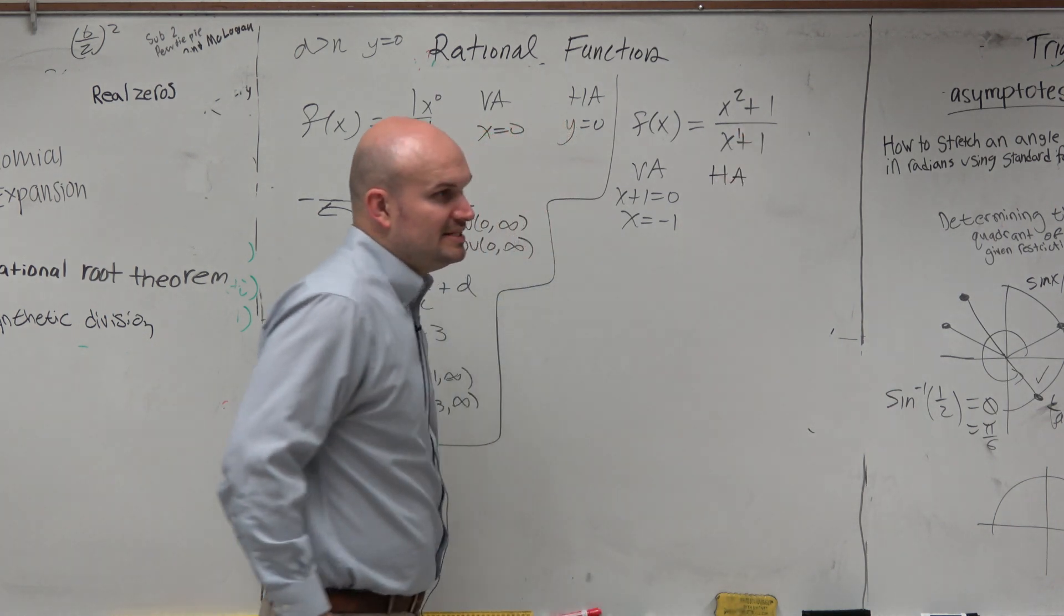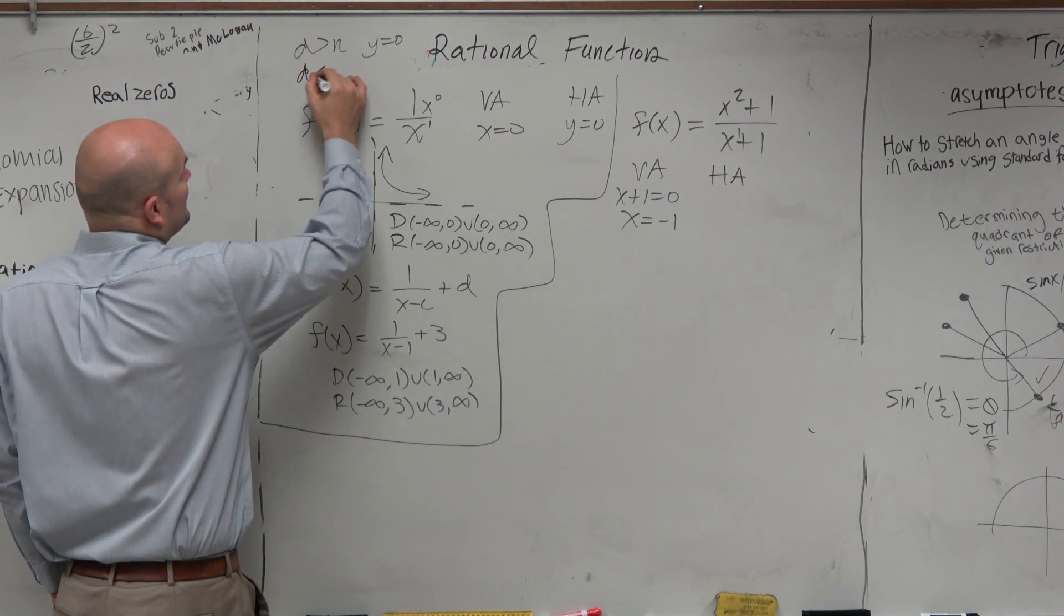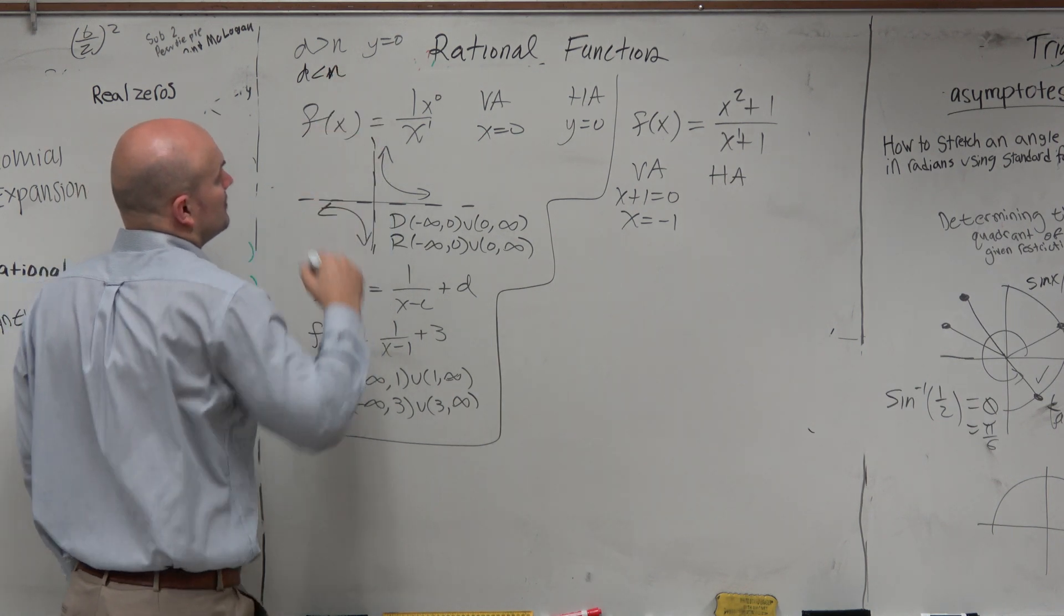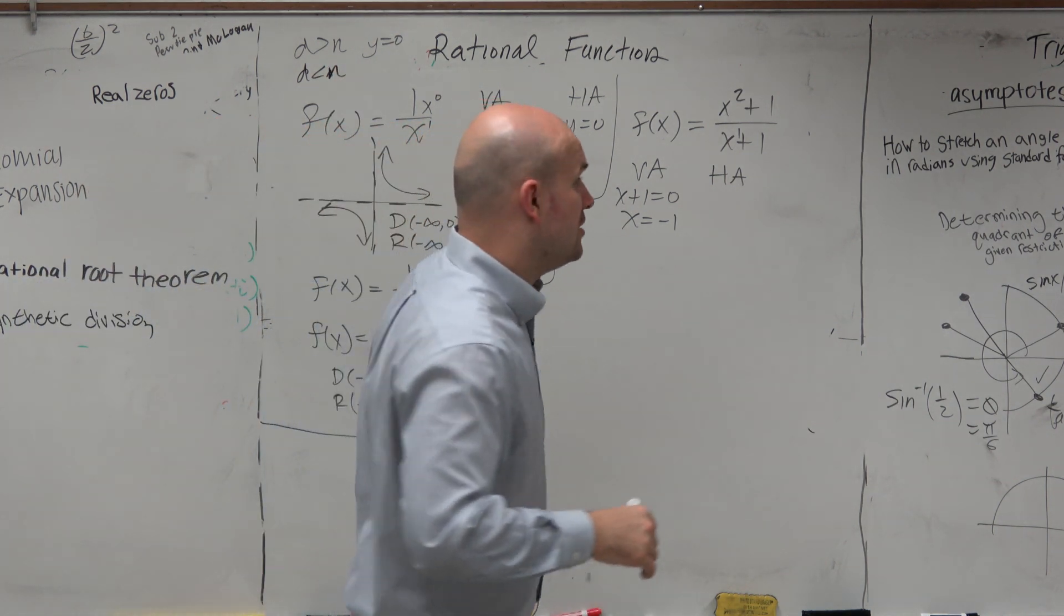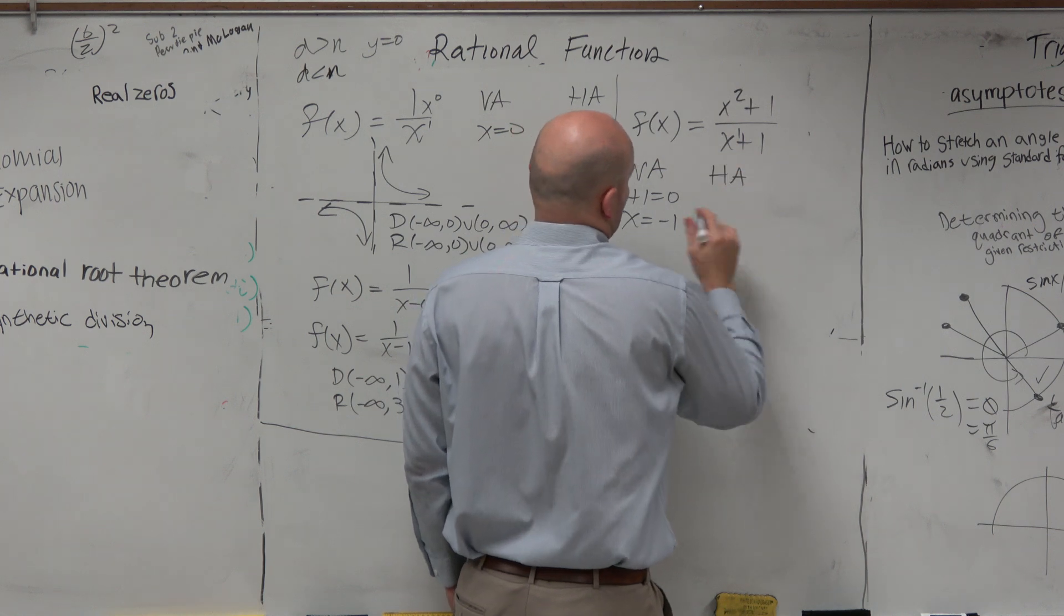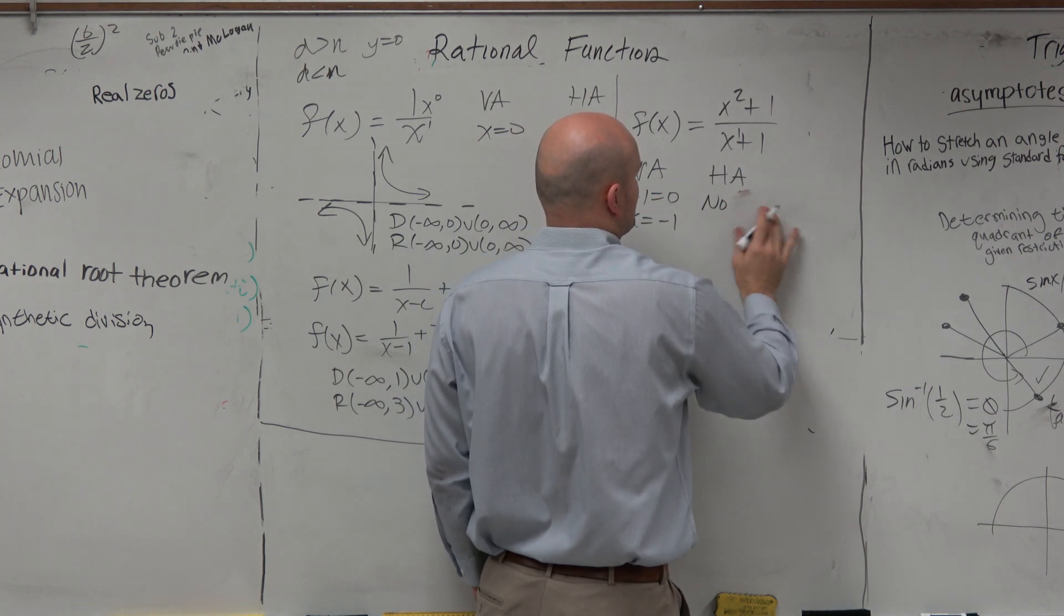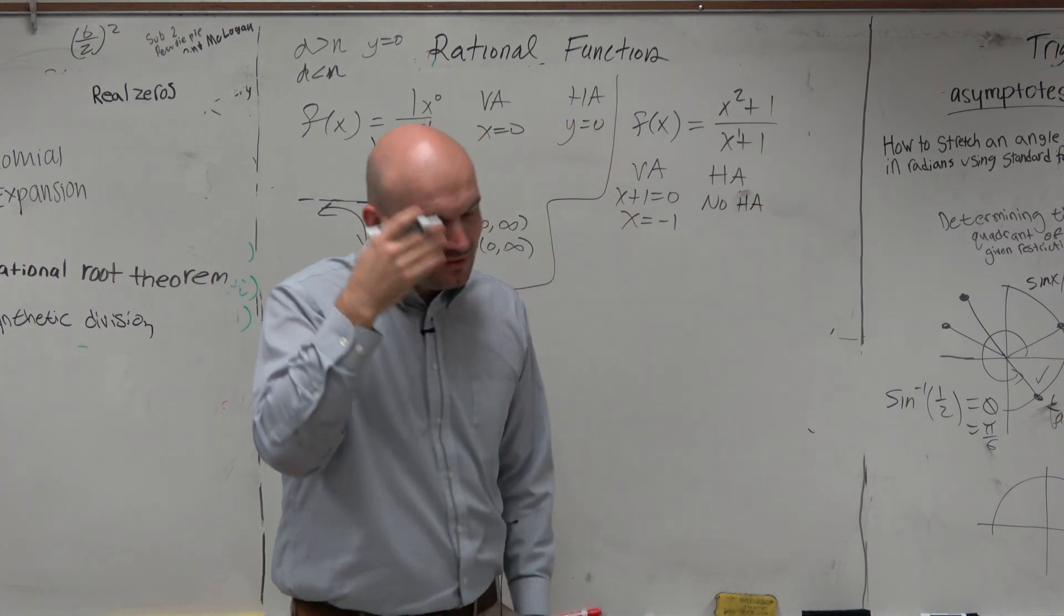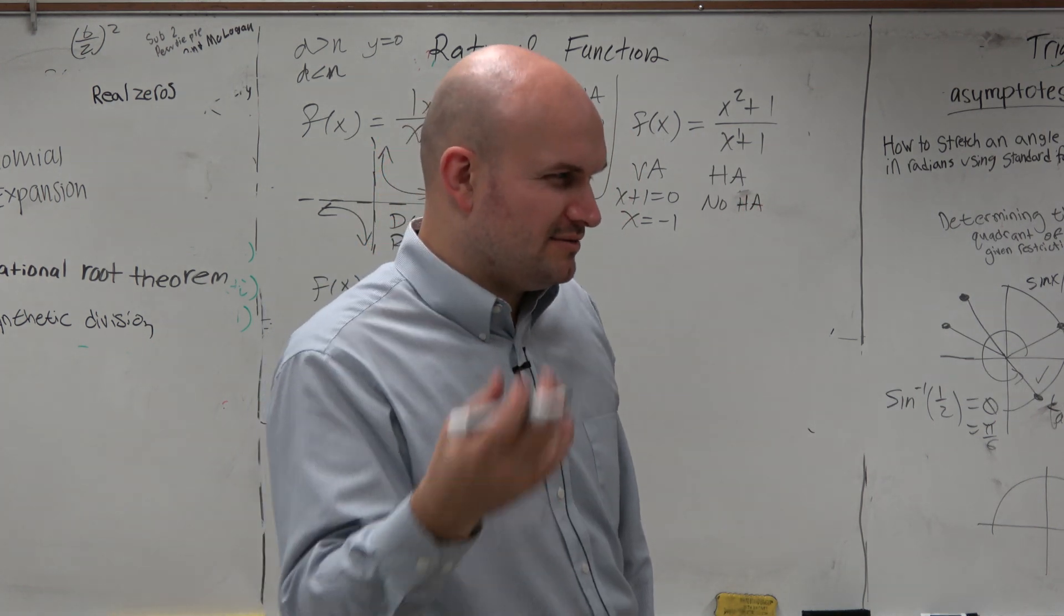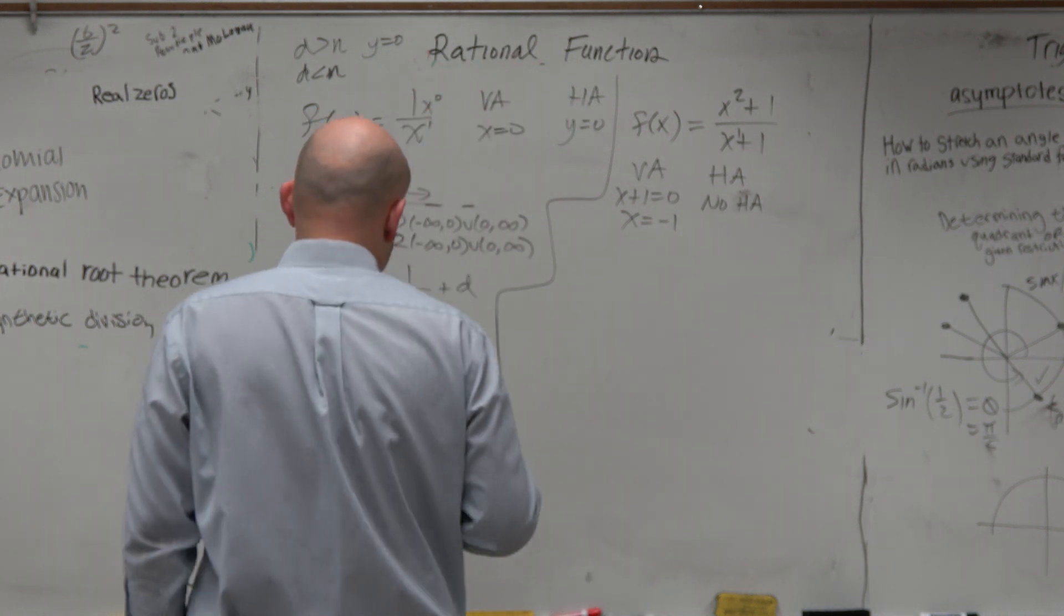Horizontal asymptote. Well, now we have something different. Now we have the denominator is less than the numerator. So when that occurs, there's no horizontal asymptote. And some people have a hard time remembering this. So let's think about it this way, guys.